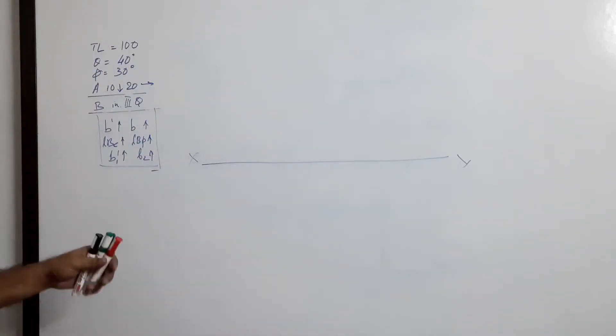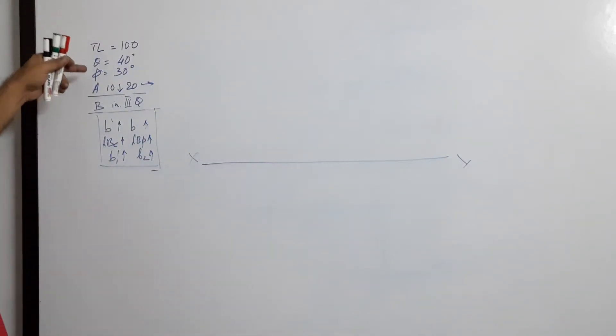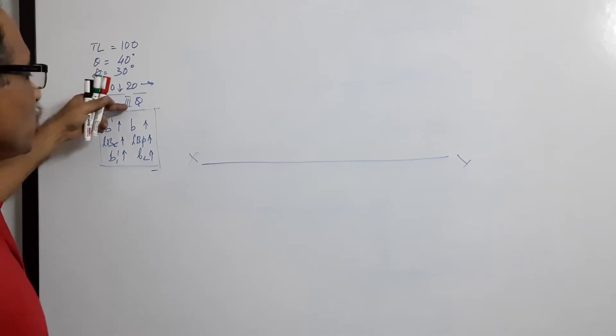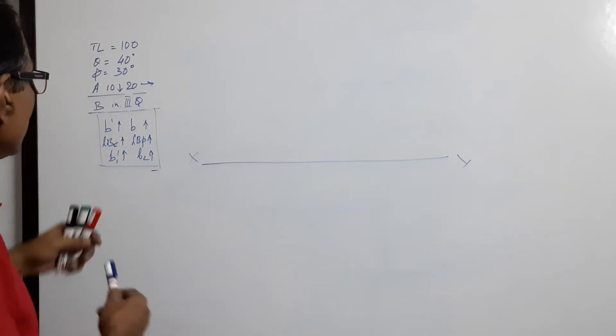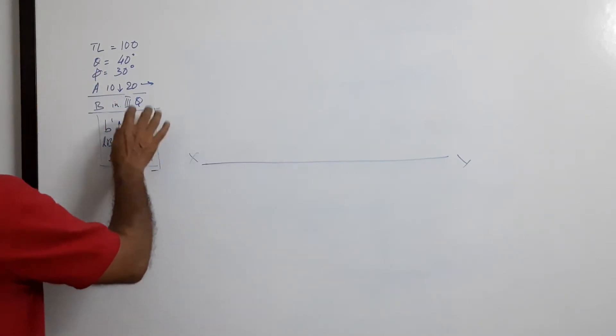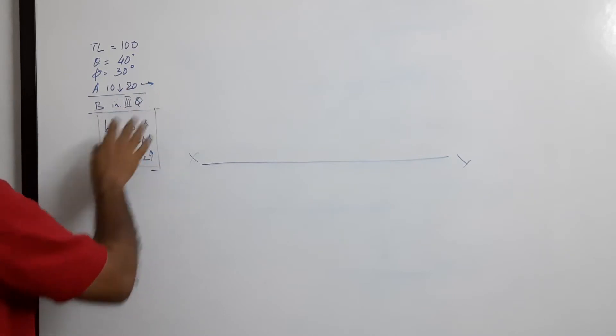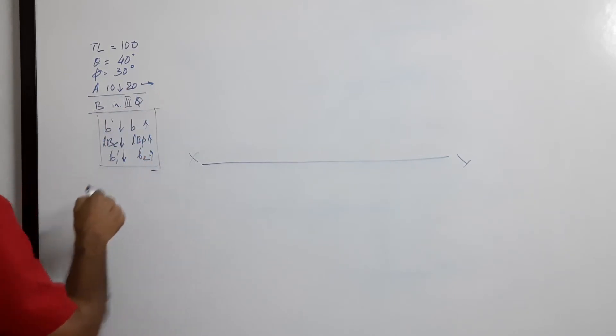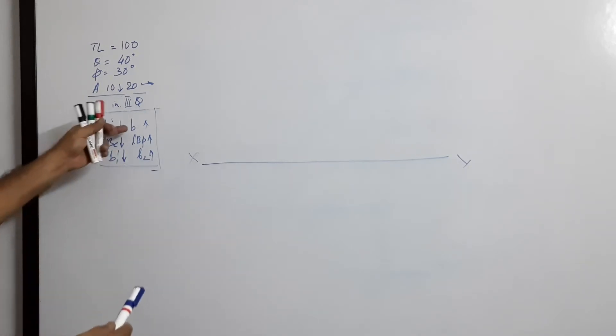Hi students, we have a similar question: true length 100, theta 40, phi 30, A in fourth quarter and B in third quarter. When B is in third quarter, elevation will come down, so B dash will come down, LBE will come down, and B1 dash will come down, whereas small B, LBP, and B2 go up.